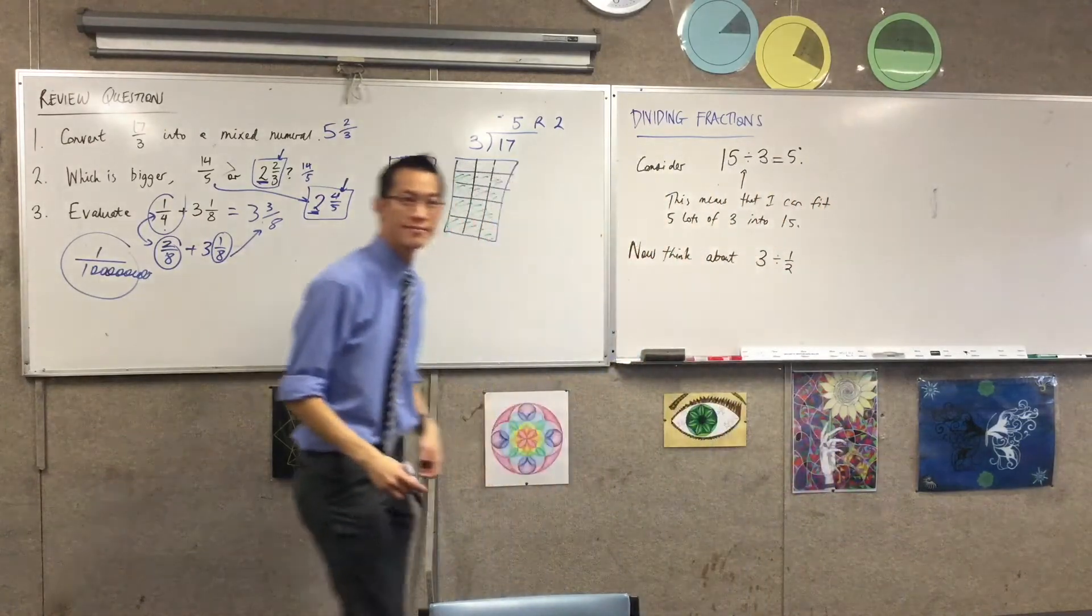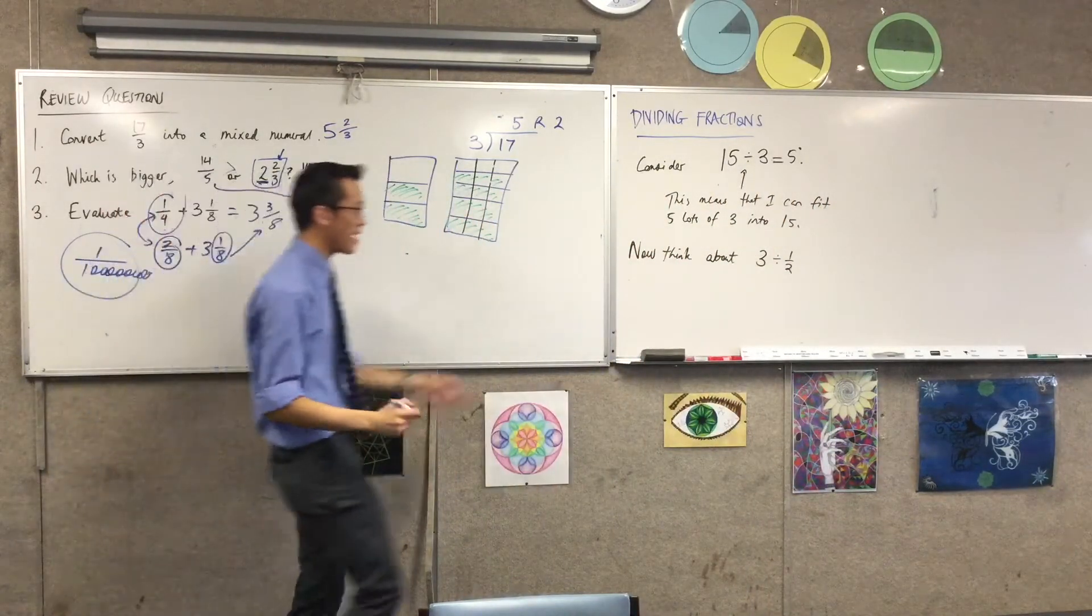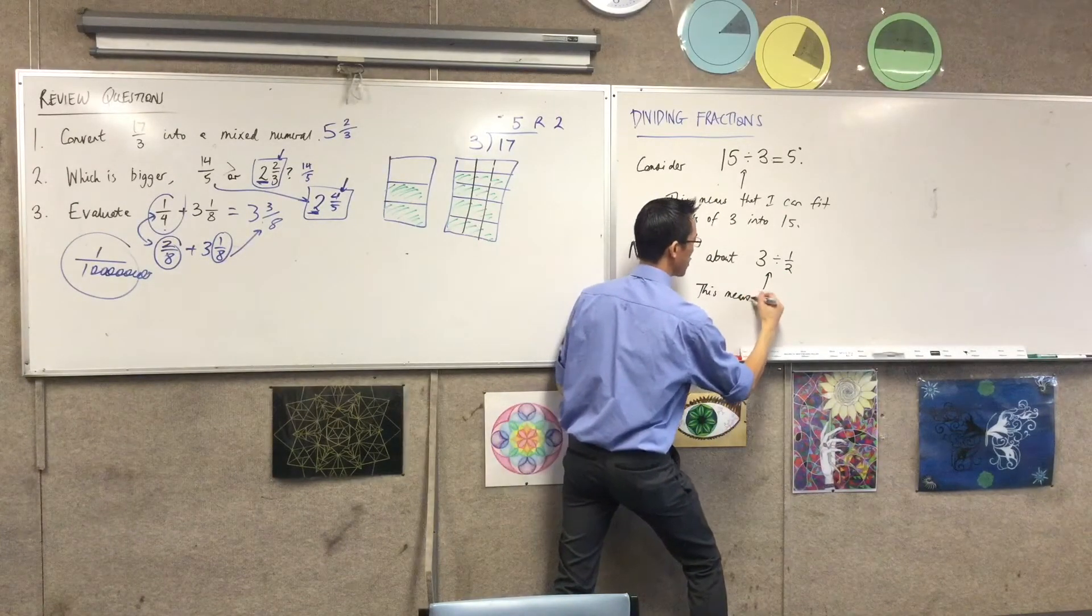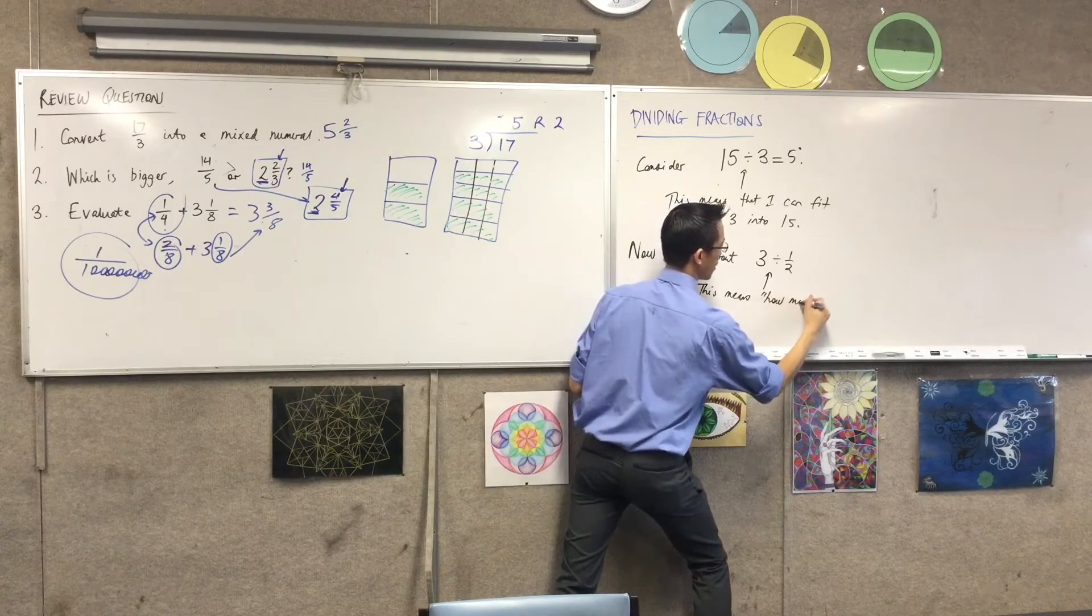15 divided by 3 is 5. That is how many 3s I can fit in here. So what is this question asking? How could we verbalize it? How many halves can go into 3? Perfect. Let's all write that down. What this means is, how many halves go into 3?